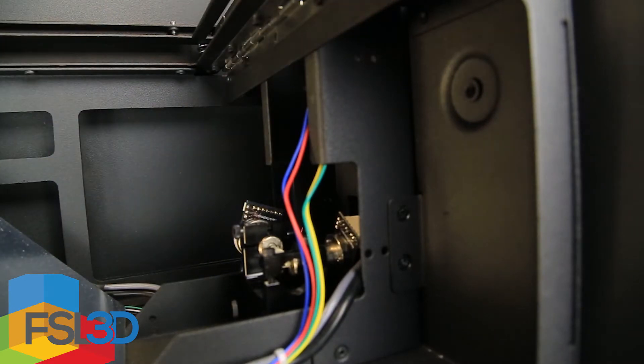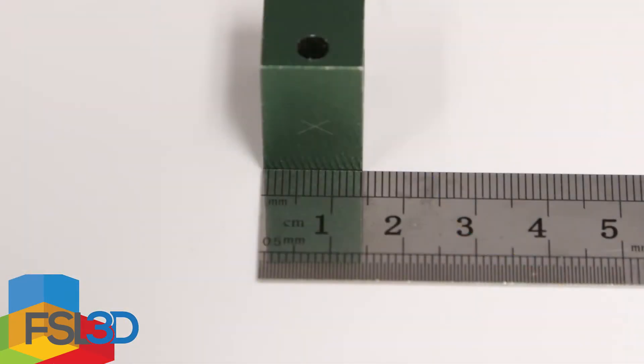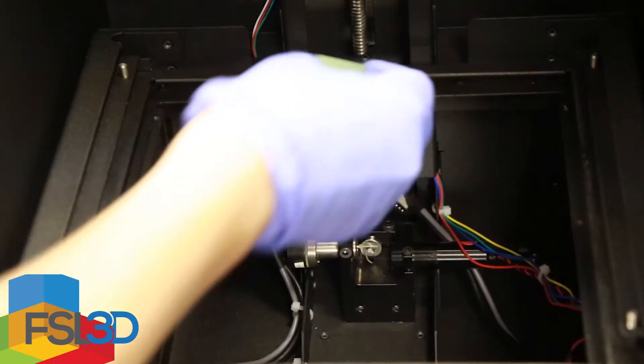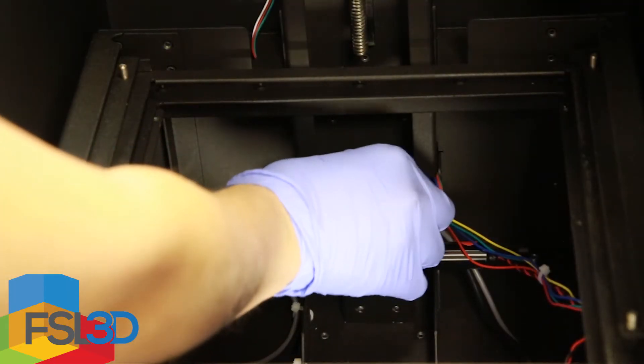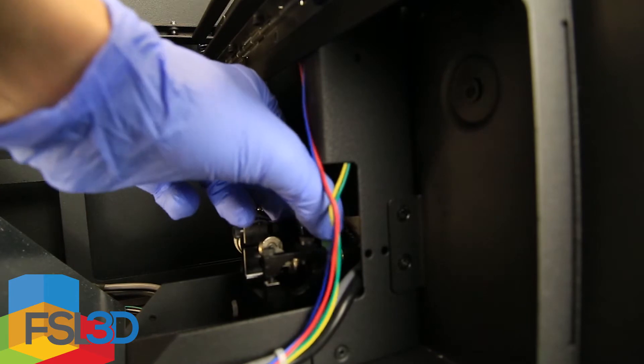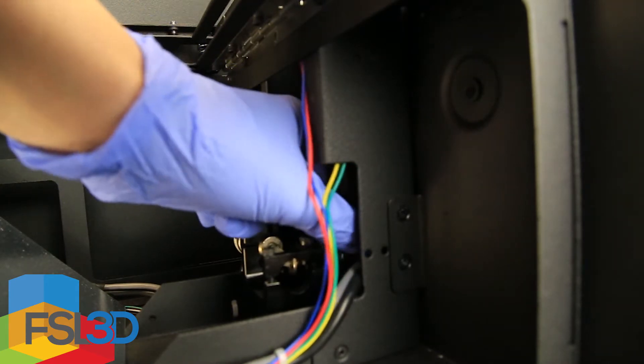Next, you're going to ensure the galvos are spaced properly. In this case, we're using spacers but a ruler will work just as well. The green spacer for the X galvo measures 14 mm.